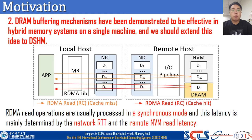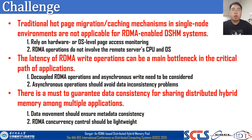Here is our second motivation. DRAM buffering has been demonstrated to be effective in hybrid memory systems on a single machine, and we could extend this idea to DSHM. RDMA read operations are usually performed in synchronous mode, and latency is mainly determined by network RTT and remote NVM read latency. Here are the challenges. First, traditional hot-page migration and cache mechanisms in single-node environments are not applicable for RDMA-enabled DSHM systems. Second, the latency of RDMA write operations can be the main bottleneck in critical paths of applications. Third, there is a need to guarantee data consistency for sharing distributed hybrid memory among multi-applications.